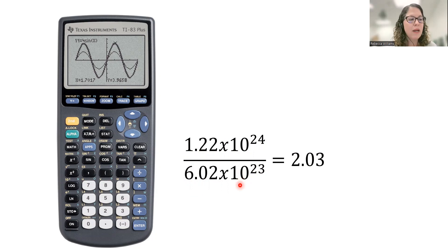If you put this in incorrectly, you're going to get 2.03 times 10 to the 46th. So your decimal is off by a huge number of places.